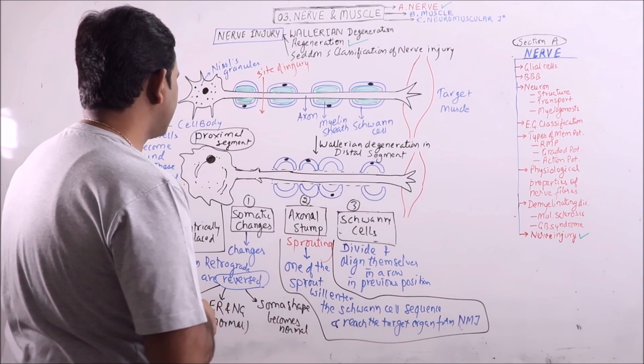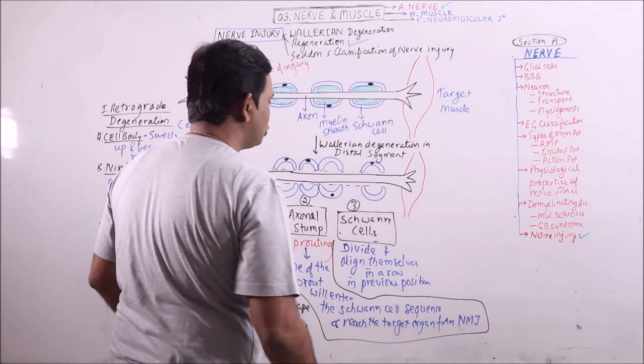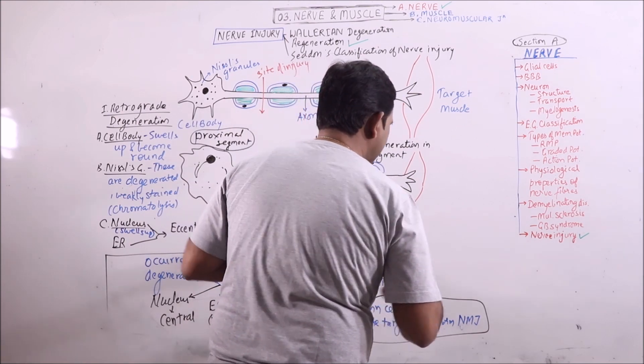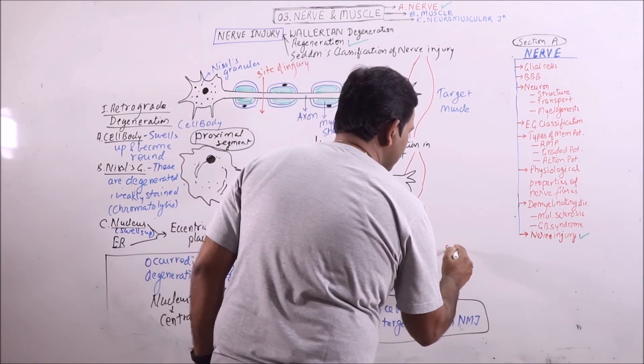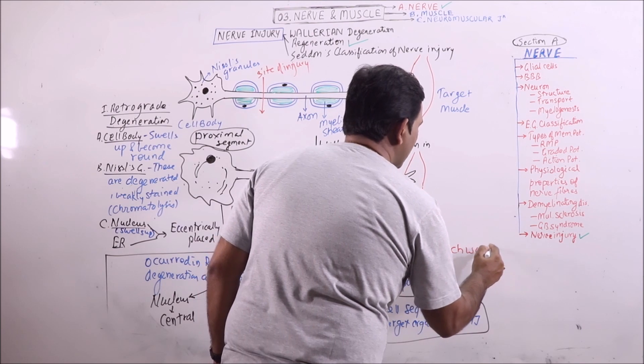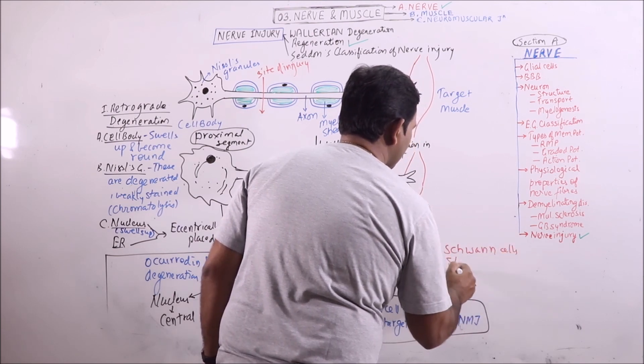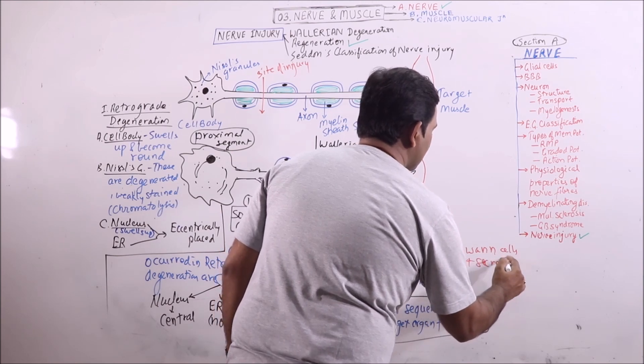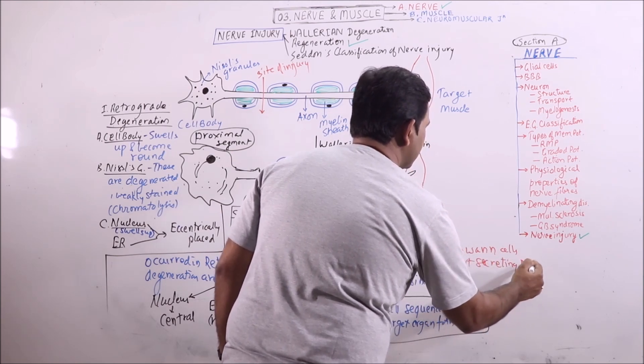So these are the changes occurring in soma, axon, and Schwann cells, and the final act of Schwann cells: they start secreting myelin sheath.